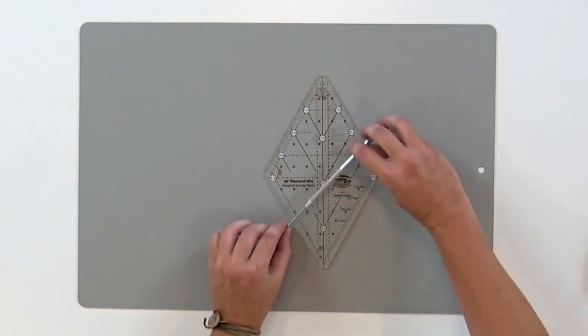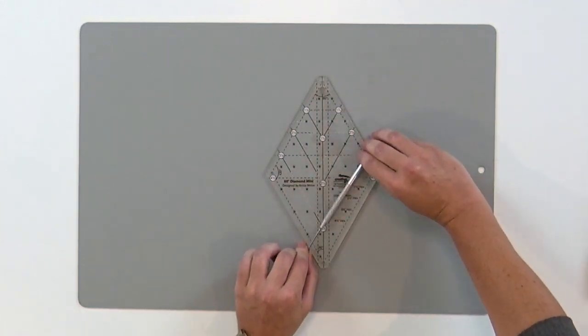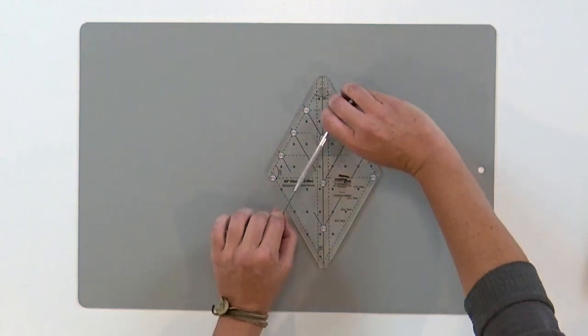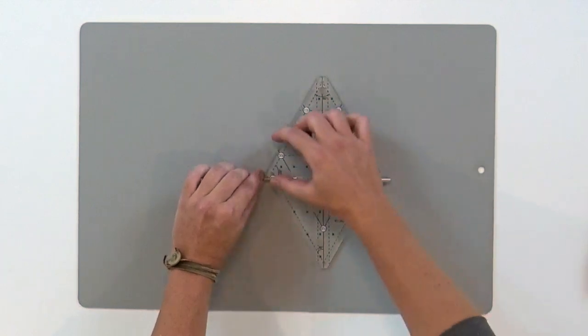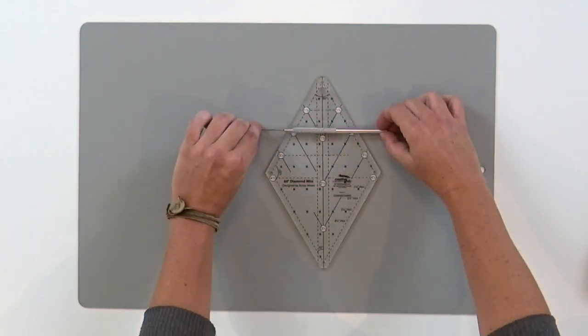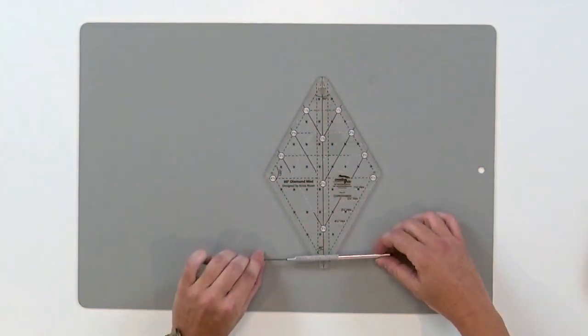And then if you use the ruler to cut this way, you'll get parallelograms from one and a half to four and a half, or trapezoids. We have strips cut from the middle section, trapezoids. So for a little ruler, it's got a lot of possibilities. Let's get started.